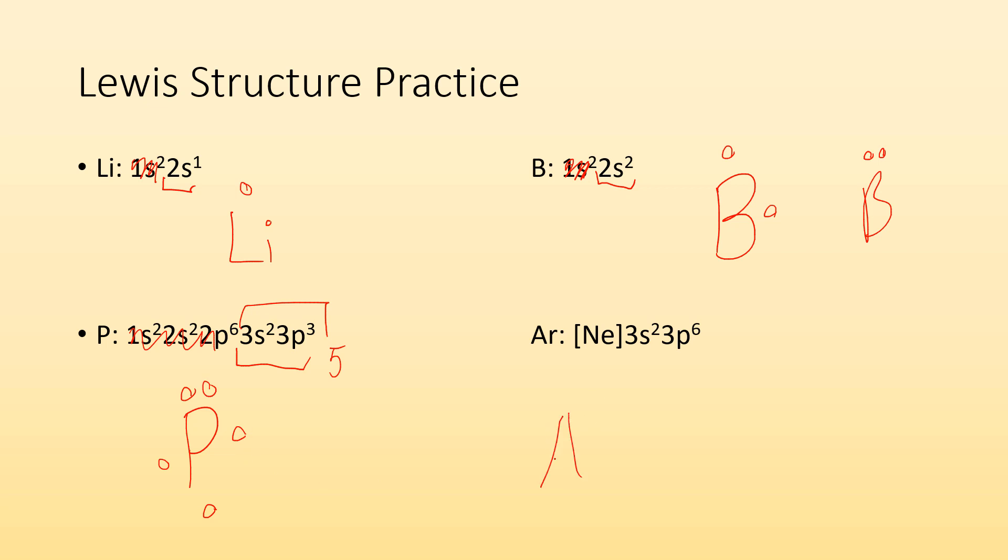And then argon, same deal. We have core electrons we're not concerned with, and we have, this time, eight valence electrons. This is why we got four sides with up to two on each side. So I got to go one, two, three, four, and then five, six, seven, and eight. And there's my Lewis structure for argon.